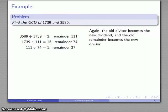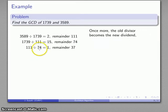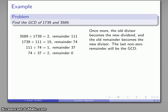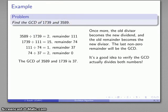I'll divide 111 by 74 and get one with remainder 37. Once more, the old dividend, 74, becomes the new dividend, and the old remainder becomes the new divisor. I divide and get remainder 0, which tells me I'm done, because I can't divide by 0. The important thing is that the last non-zero remainder is going to be the greatest common divisor of the original two numbers. It's not a bad idea to verify — the GCD has to divide both numbers. And we find that 37 does, in fact, divide both numbers.